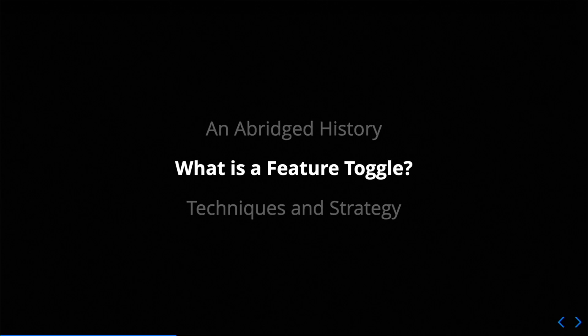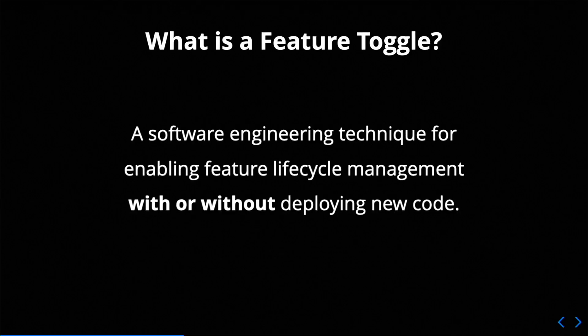So what exactly is a feature toggle and where do feature toggles come into this? A feature toggle is a software engineering technique for enabling feature lifecycle management with or without deploying new code. The 'with or without deploying code' part sounds a bit odd — I had a picture of how feature toggles work where we deploy software and can turn things off and on without deploying new code. But it turns out it's something larger than that.